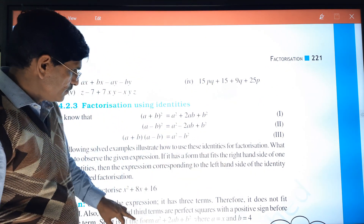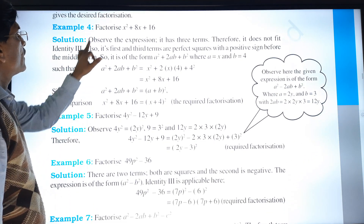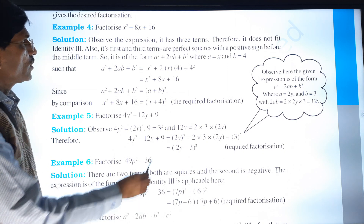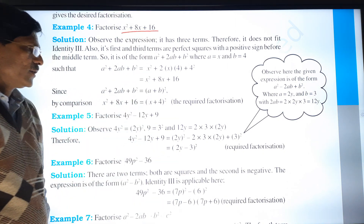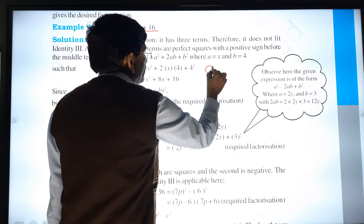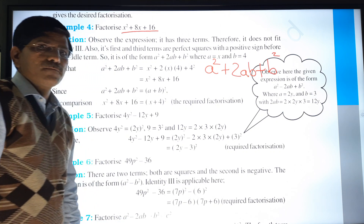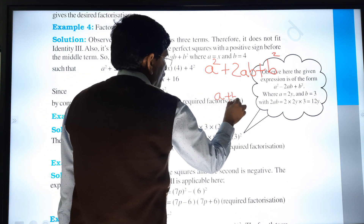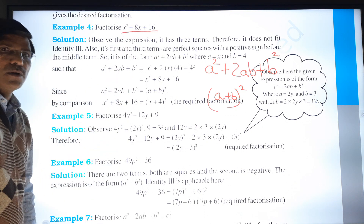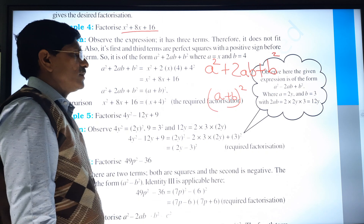Let me do a sum. The first example is x² + 8x + 16. We have to identify which identity to use. Since the sign is positive, we use the first identity: a² + 2ab + b² = (a+b)². The question is in the form x² + 8x + 16.